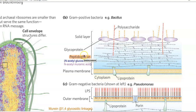In gram positive bacteria you can see a thicker layer of peptidoglycan. This peptidoglycan is made up of two monomeric subunits: one is N-acetyl glucosamine (NAG) and the other is N-acetyl muramic acid (NAM). Apart from peptidoglycan, there are also glycoproteins and other components in the cell wall.